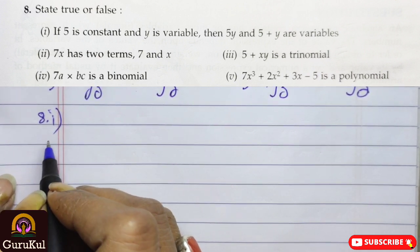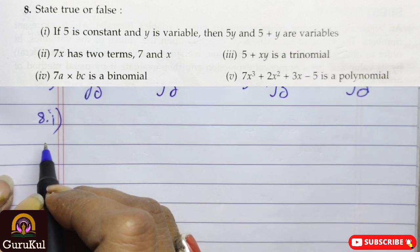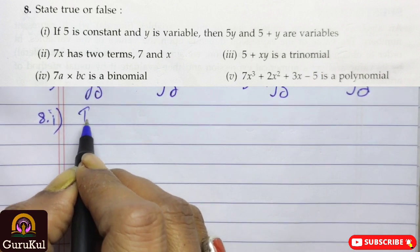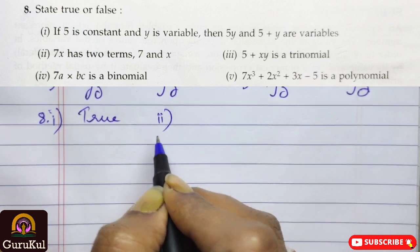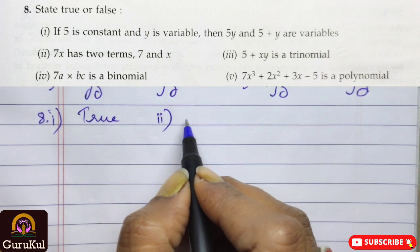The first part is, if 5 is constant and y is variable, then 5y and 5 plus y are variables. First, let me tell you what is constant. Constant is a number without any alphabets. So, 5 is a constant, yes and y is a variable, then 5y and 5 plus y are variable, this is true. Second part, 7x has two terms, 7 and x, false.